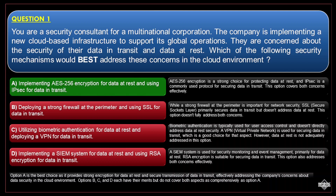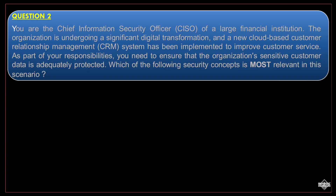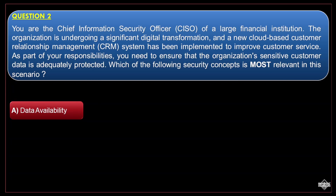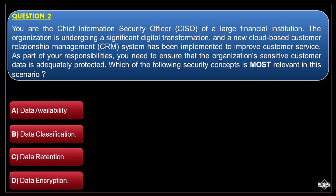Let us now move on to our next question. You are the Chief Information Security Officer (CISO) of a large financial institution. The organization is undergoing a significant digital transformation, and a new cloud-based customer relationship management (CRM) system has been implemented to improve customer service. You need to ensure that the organization's sensitive customer data is adequately protected. Which of the following security concepts is most relevant? Option A: Data availability. Option B: Data classification. Option C: Data retention. Option D: Data encryption.